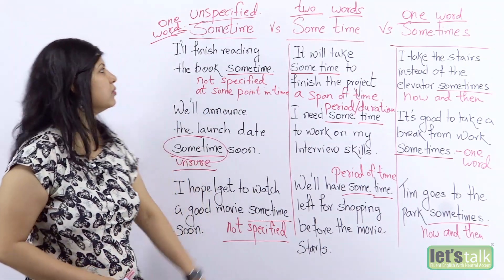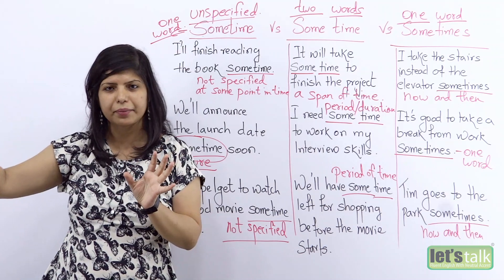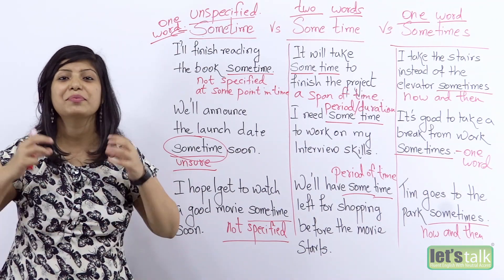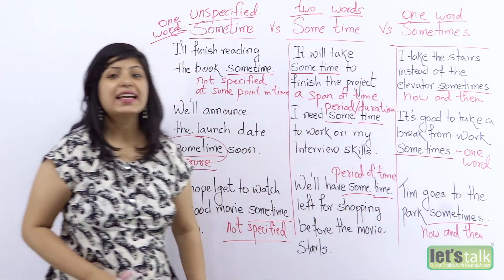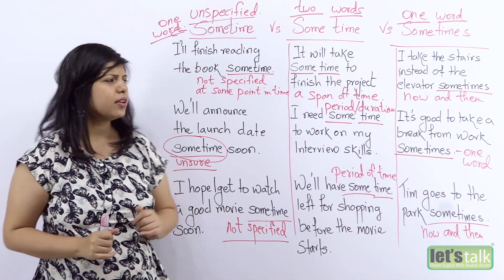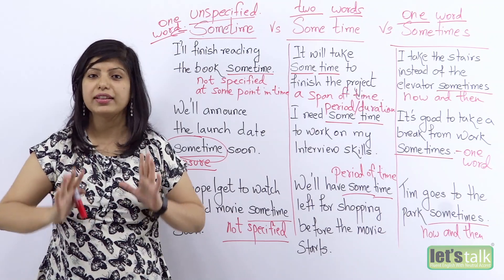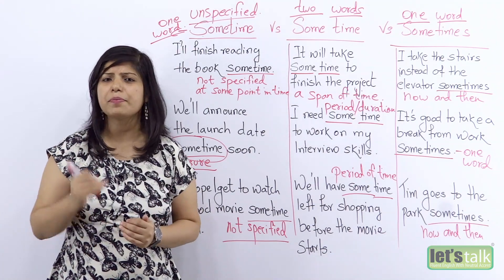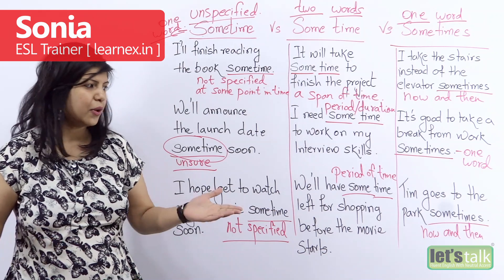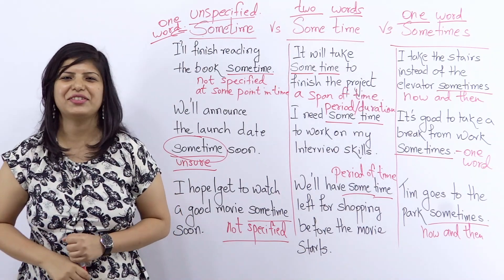So just to quickly recap: sometime — one word — is an unspecified, not sure, some point in time. Some time — two words — is a particular period of time; it could be short or long. And finally, sometimes — one word — means now and then or occasionally. You see how different these three words are. I hope you've understood the difference and how to use them. Make sure you practice this on a daily basis and it'll come out very easily with continued practice. Well, this brings me to the end of today's lesson. I hope you enjoyed watching. I'll be back very soon — take good care of yourself. Bye.